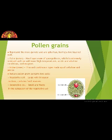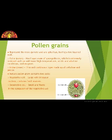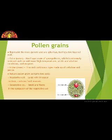Pollen grains are spherical, measuring about 25 to 50 micrometers in diameter. The hard outer layer called the exine is made up of sporopollenin, which is one of the most resistant organic materials known. It can withstand high temperatures, strong acids and alkali. No enzyme that degrades sporopollenin is so far known. Pollen grain exine has prominent apertures called germ pores where sporopollenin is absent.